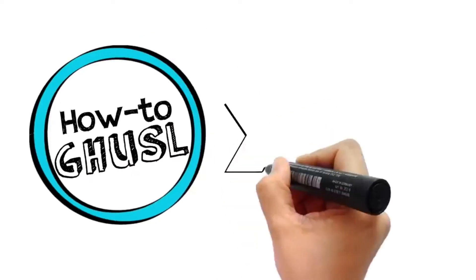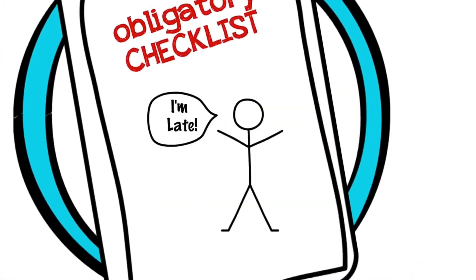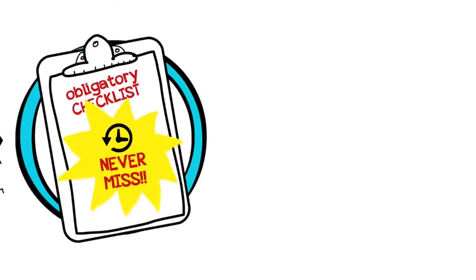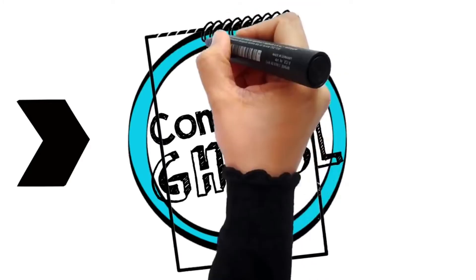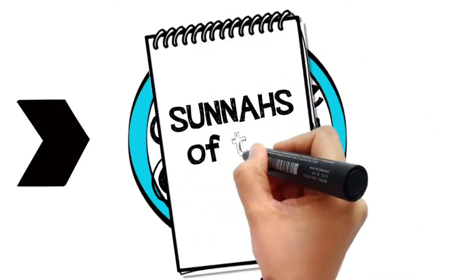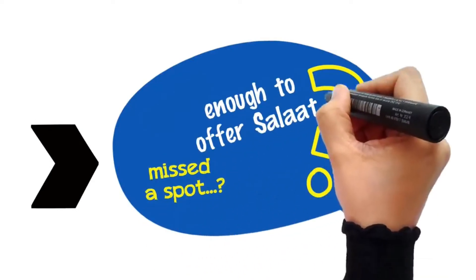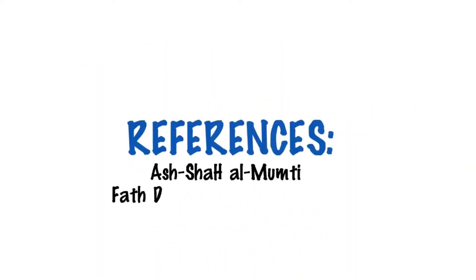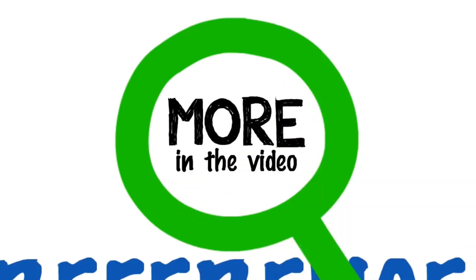In this series, we will begin the discussion with the obligatory Ghosli, which will be helpful when you are in a hurry or if there is not enough time to take a complete Ghosli. Next, I will take you step by step through the etiquettes of the complete Ghosli, where we will discuss the Sunnah acts. Finally, in the next video we will answer some frequently asked questions about Ghosli. Alhamdulillah, all the information and answers are taken from the writings and fatawa of the scholars.